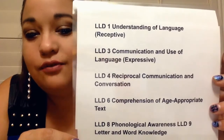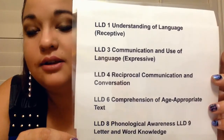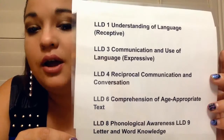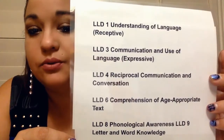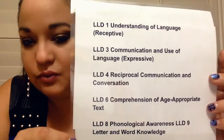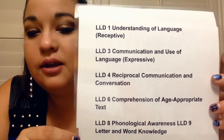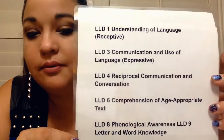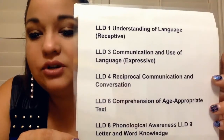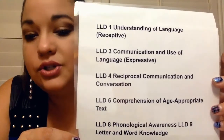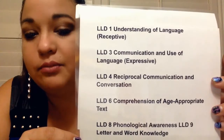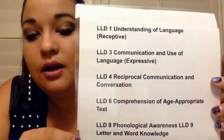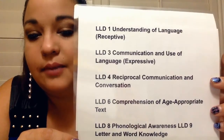Then we have LLD4, which is reciprocal communication and conversation — back-and-forth communication. Your child needs the skill to understand language receptively, be able to express it, and sustain a back-and-forth conversation, including answering questions and processing that information. LLD6 is comprehension of age-appropriate text. If you're reading a picture book at the preschool level and you ask your child a question, are they able to understand what is going on in the story or within the pictures? That is what LLD6 is about.